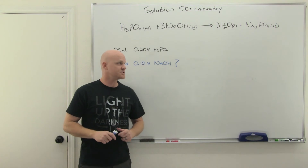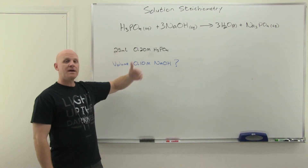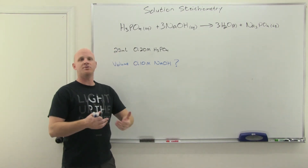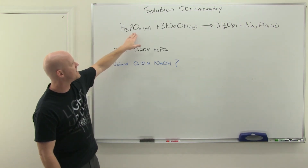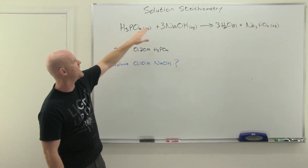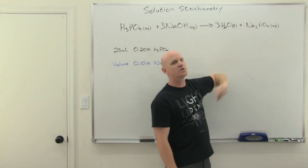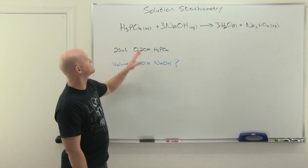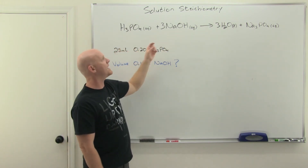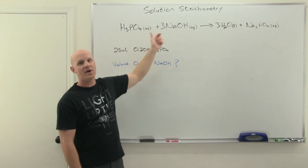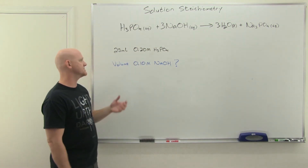Let's do one more example with solution stoichiometry: an acid-base neutralization reaction. We have phosphoric acid reacting with sodium hydroxide to produce water and sodium phosphate. H3PO4 and NaOH react in a 1:3 mole ratio — that mole-to-mole ratio is at the heart of our stoichiometry here.